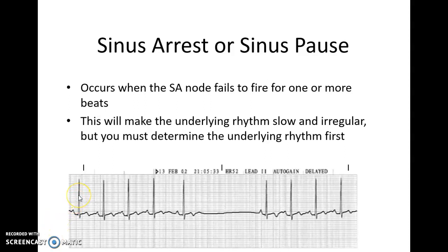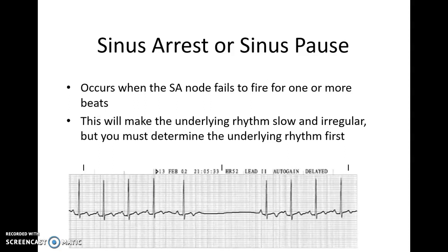Looking at this strip, I see R to R to R to R — it looks regular. This one here started to slow down just a little bit, and then it looks like I'm missing one or two beats. Then it picks right back up and my R to R to R becomes regular again. This particular pause is going to make my rhythm a little slower, but looking at the rate before the pause, even from this six-second strip I would have had at least a rate of 80, if not higher. So I would call this a sinus rhythm with a sinus pause.